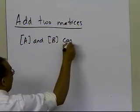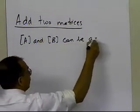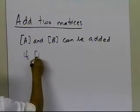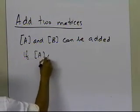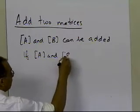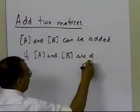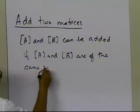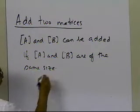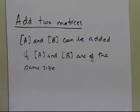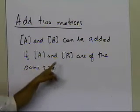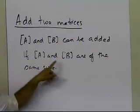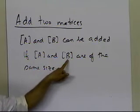So if you have two matrices A and B, they can be added if A and B are of the same size. What that means is that the number of rows and columns — the number of rows of A have to be the same as the number of rows in B, and the number of columns in A has to be the same as the number of columns in B.